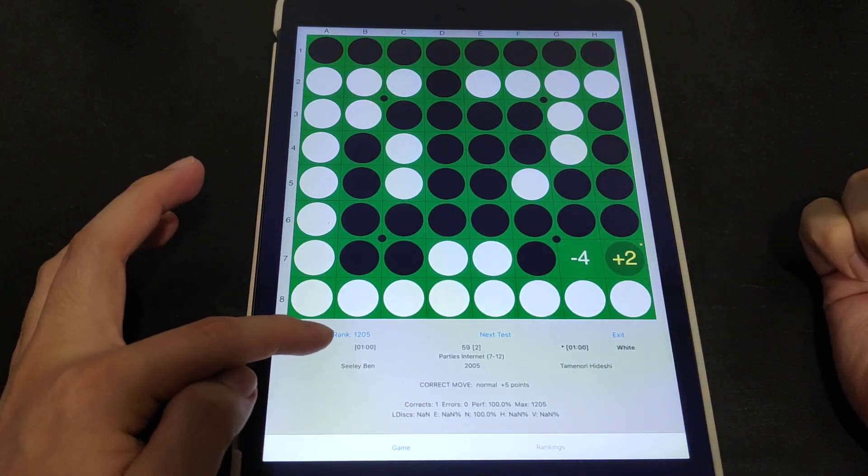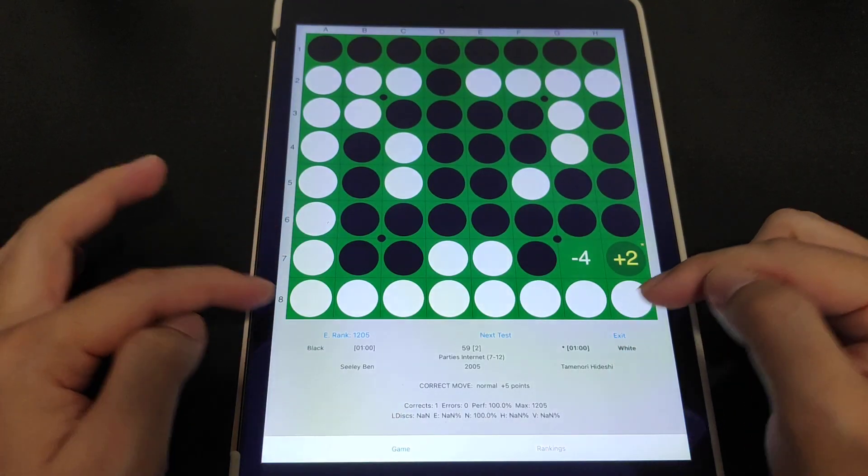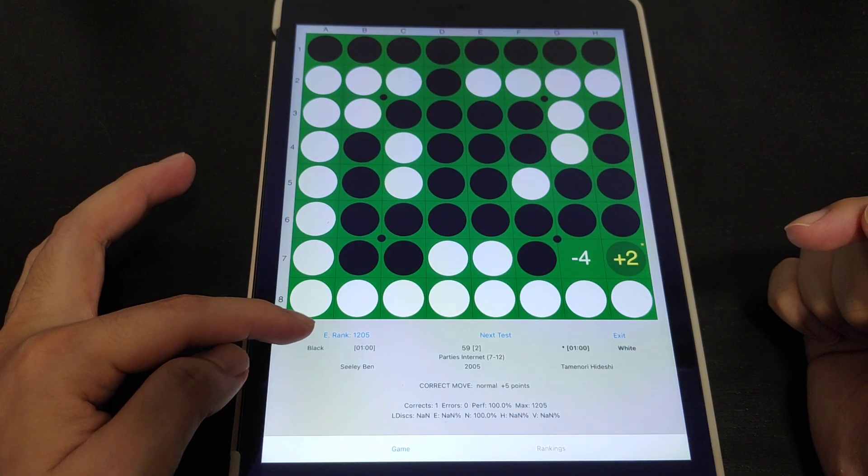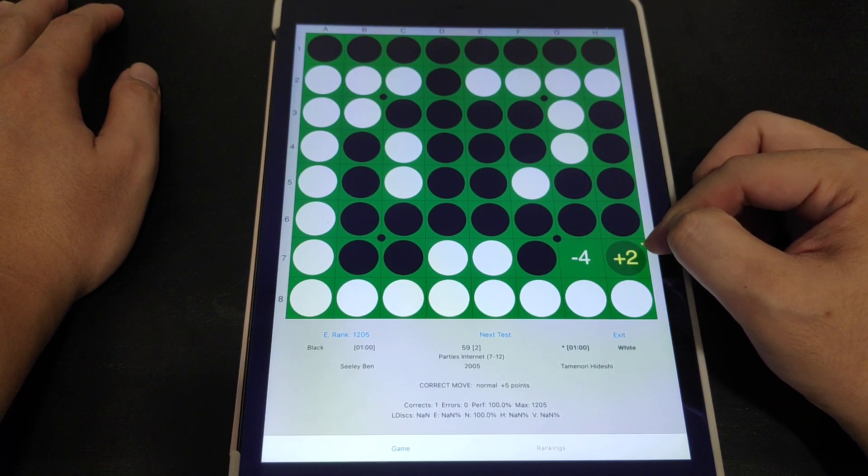You can see the rating has just gone up. Let me just go back to this. The rating has just gone up from 1200 to 1205. And at the same time when you click on the correct move, they will show you the star, which is the correct one.